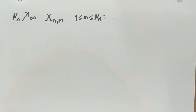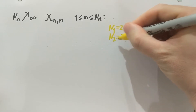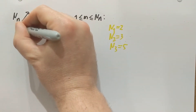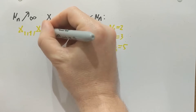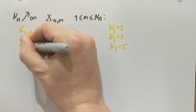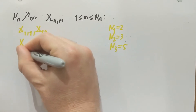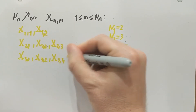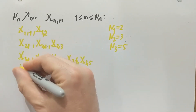This might be very abstract, so let me draw a little table for you. Suppose that we have n1 equals 2, n2 is 3, and n3 is 5. That means I have random variables x_{1,1} and x_{1,2}, then x_{2,1}, x_{2,2}, and x_{2,3}, and then x_{3,1}, x_{3,2}, x_{3,3}, x_{3,4}, and x_{3,5}, and so on. So you see that it's a triangular array.